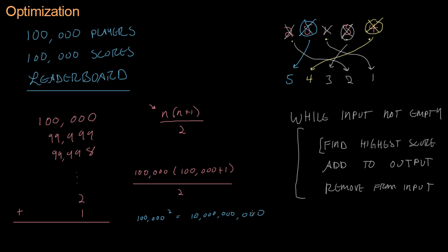We know better algorithms. The most recent one covered in this series was heap sort, which we used in the graph theory section to speed up Dijkstra's algorithm. In a heap sort, instead of on the order of 100,000 squared operations, it would be more like 100,000 times log base 2 of 100,000. The logarithm grows very slowly, so that comes out to approximately 1.6 million.